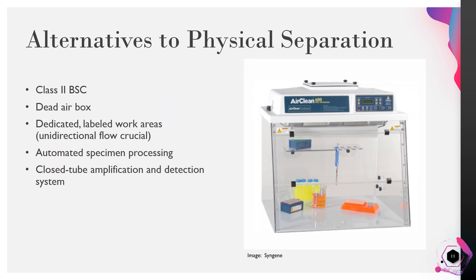Many labs do not have the space or budget for three or even two separate work areas for molecular testing. Alternatives to physical separation include using class 2 biosafety cabinets or a dead air box — called that because it lacks the ventilation system of a biosafety cabinet. If testing takes place in one physical space, it is crucial to have dedicated, labeled work areas. Automated specimen processing and closed tube amplification detection systems can also help in small spaces, but these are often costly and cost-prohibitive for smaller labs.